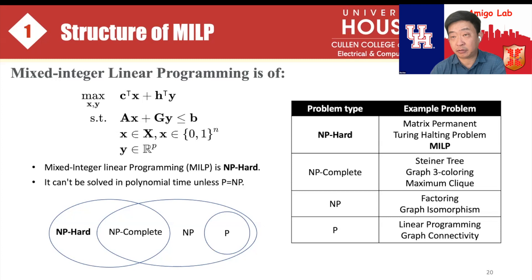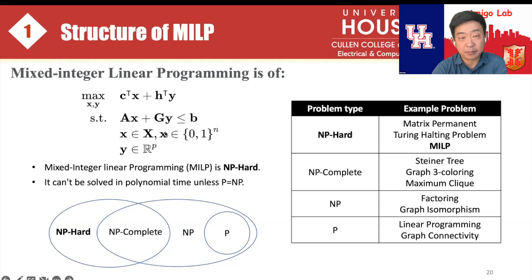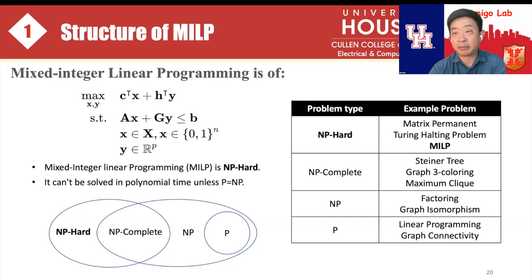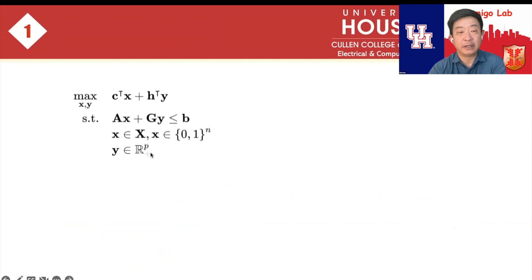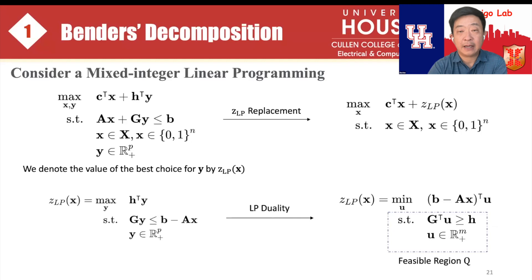We consider whether we can link the classical computer with the quantum computer together to take advantage of both. We formulate the mixed-integer programming problem — it can be linear, convex, or even non-convex. For simplicity, we use a linear formulation for illustration, where x is an integer variable and y is a continuous variable, and both the objective function and constraints are coupled — a typical NP-hard mixed-integer programming problem.